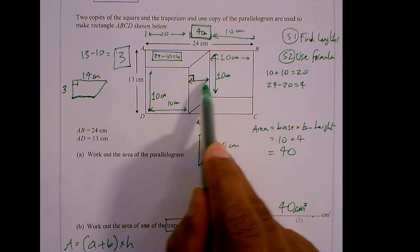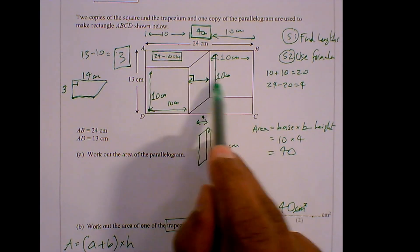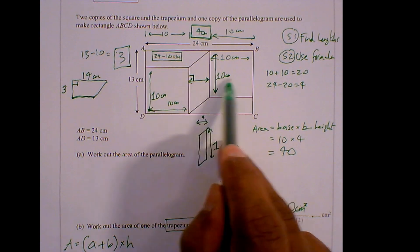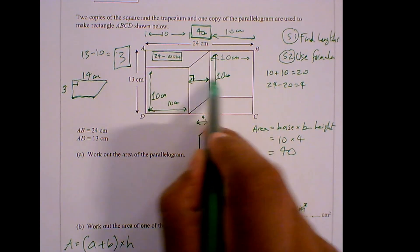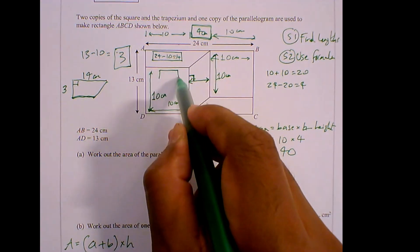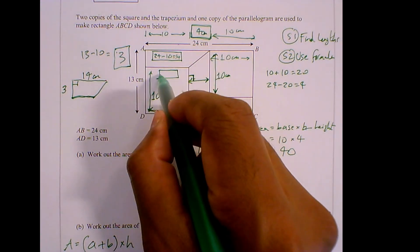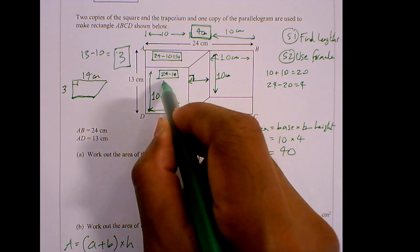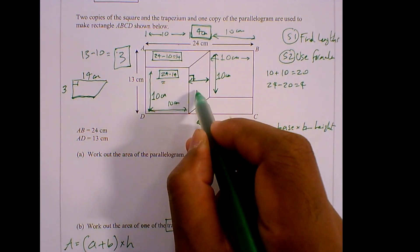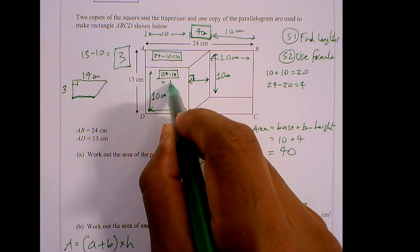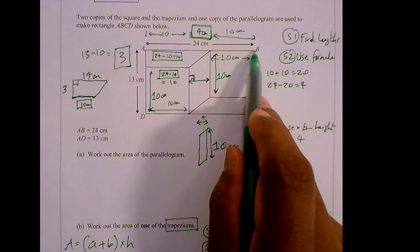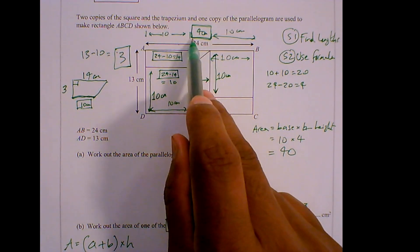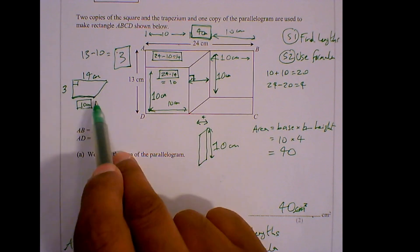Now I know that this distance here is 4 from before and this is 10. So 10 plus 4 gives me 14. So what is this little bit going to be? It's going to be 24 take away 14, which gives me 10. 24 take away 10 is 14, take away that little 4 gives me 10. So I've got 10 there. So I've got my dimensions now.